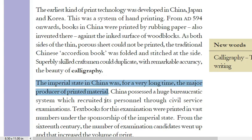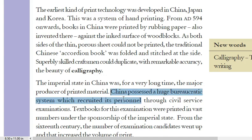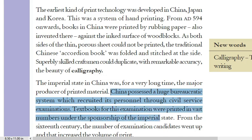The imperial state in China — the Rajashai state — was for a very long time the major producer of printed material. China possessed a huge bureaucratic system which recruited its personnel through civil service examinations. They had a huge network under the Bureau system, and people were recruited only after passing civil service examinations. Textbooks for this examination were printed in vast numbers under the sponsorship of the imperial state.